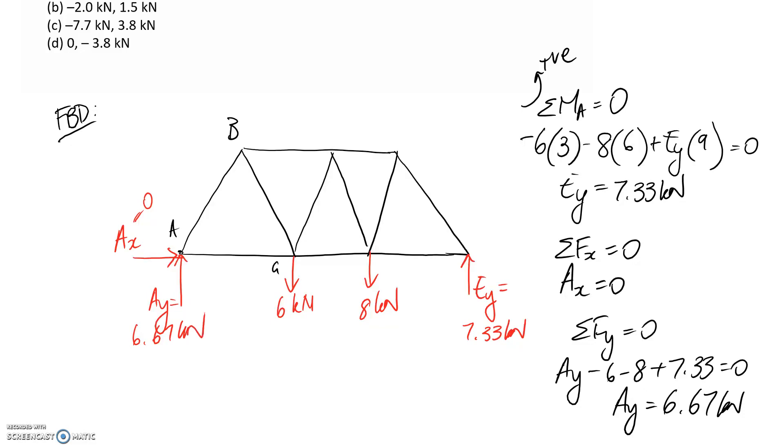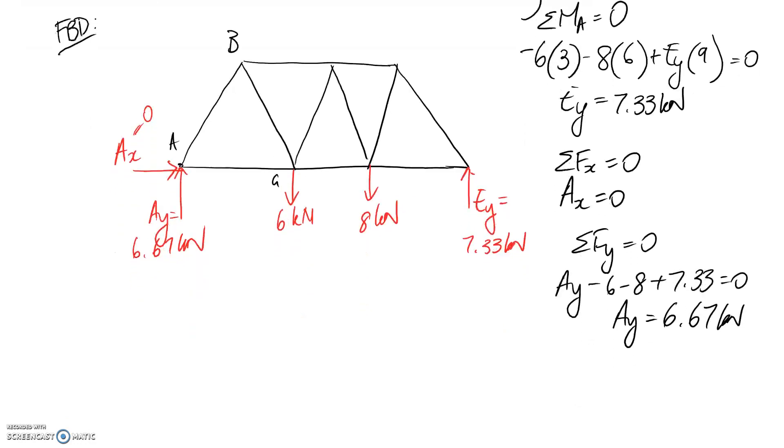So now that we know the reactions happening at A, let's analyze what's happening at joint A, using method of joints. Isolating this, we have the 6.67 going up. Ax is 0, so I may as well not put it on the diagram, since it's not going to have any effect on the forces. And then we have the two force members coming out of it, AB and AG.